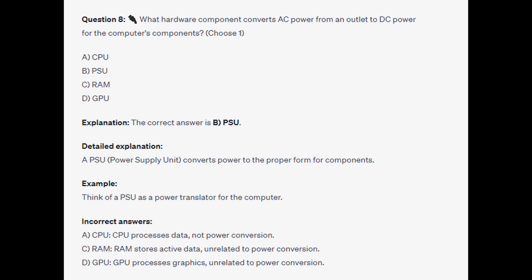For the incorrect answers: the CPU processes data, not power conversion; and RAM stores active data, unrelated to power conversion.